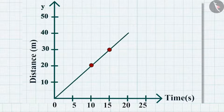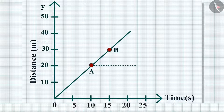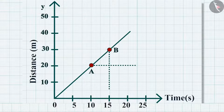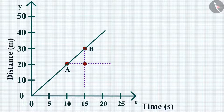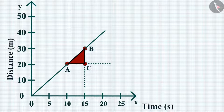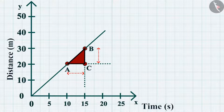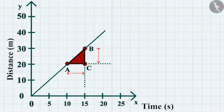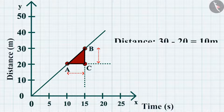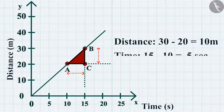Choose two points A and B on the graph. Draw a line parallel to the x-axis from point A and another line parallel to the y-axis from point B. These two lines meet each other at point C to form a triangle ABC. On the graph, AC denotes the time interval while BC corresponds to the distance. We can see from the graph that as the object moves from point A to B, it covers a distance of 30 minus 20, equal to 10 meters, in a time of 15 minus 10, equal to 5 seconds.